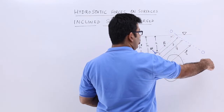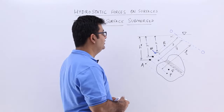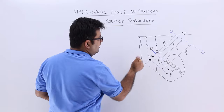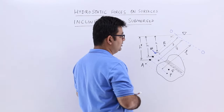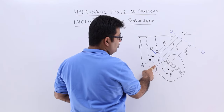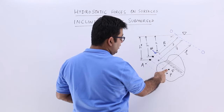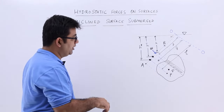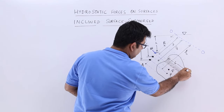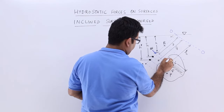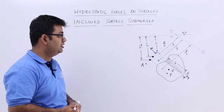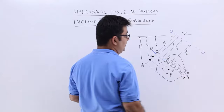Let us draw a reference line OO, perpendicular to the inclined surface. The distance of the centre of pressure from line OO is y-star, and the distance of the centroid from that section is y-bar. We now consider a strip at a distance y from axis OO, with width B and thickness dy.